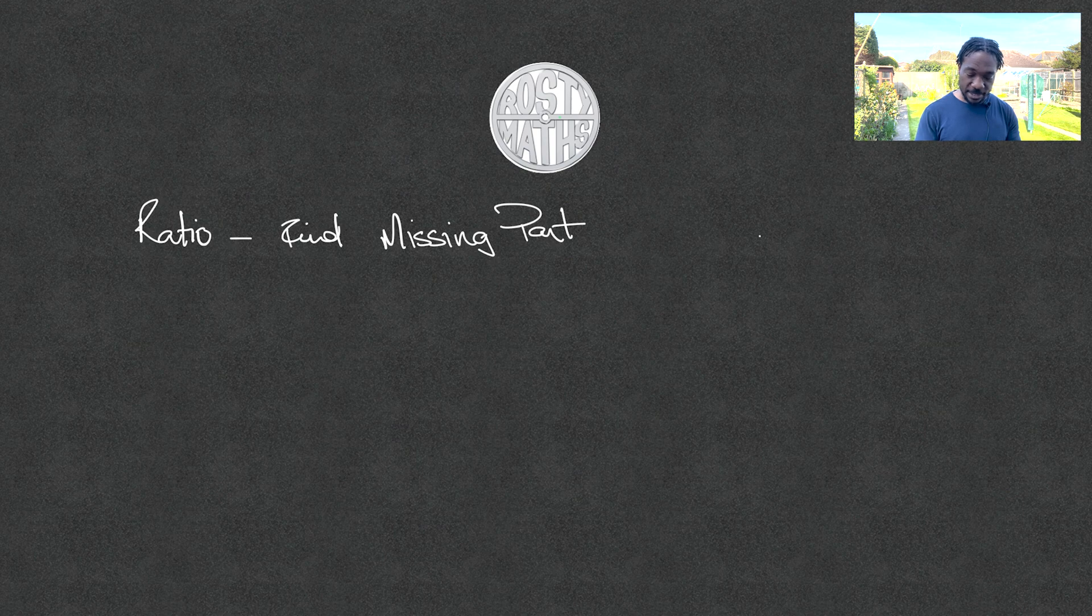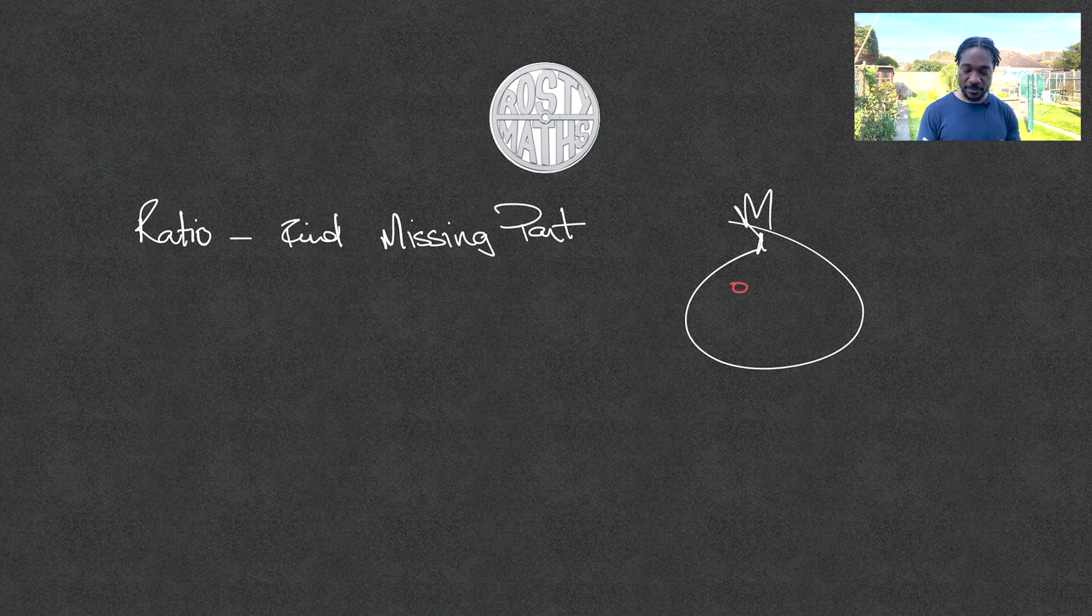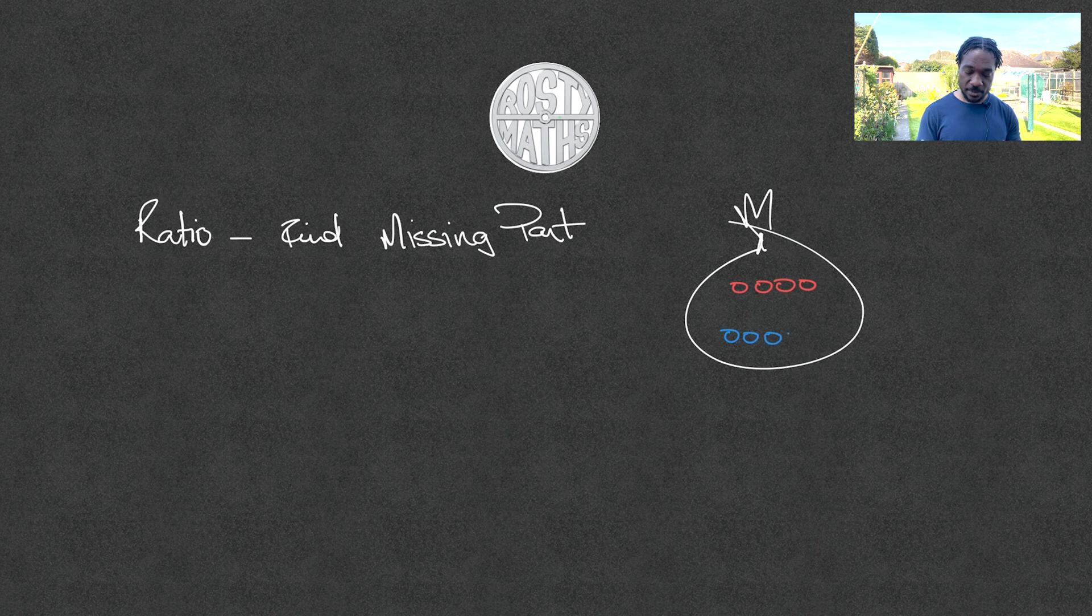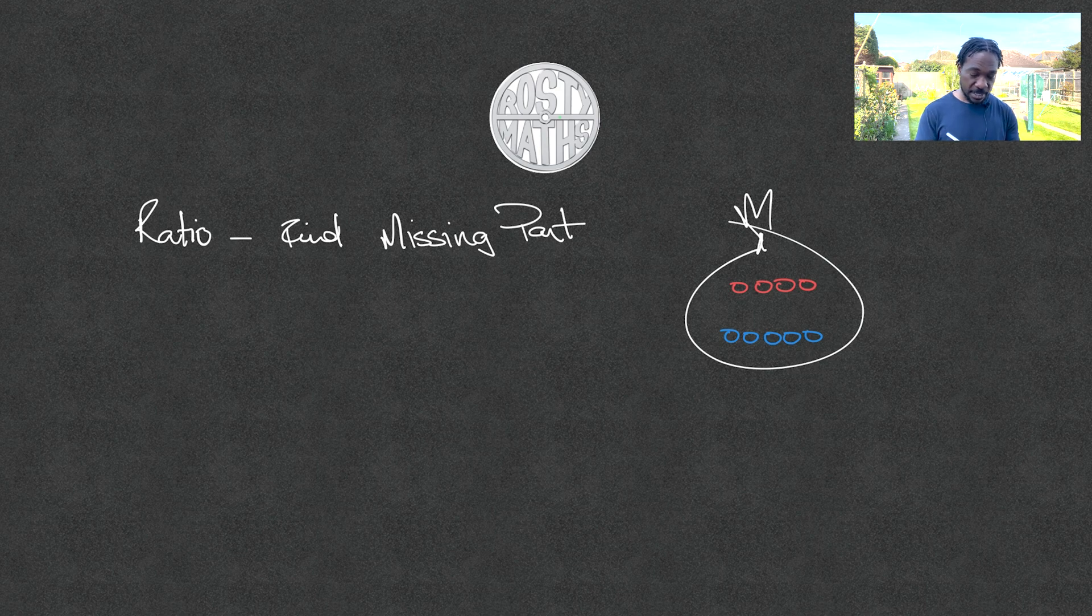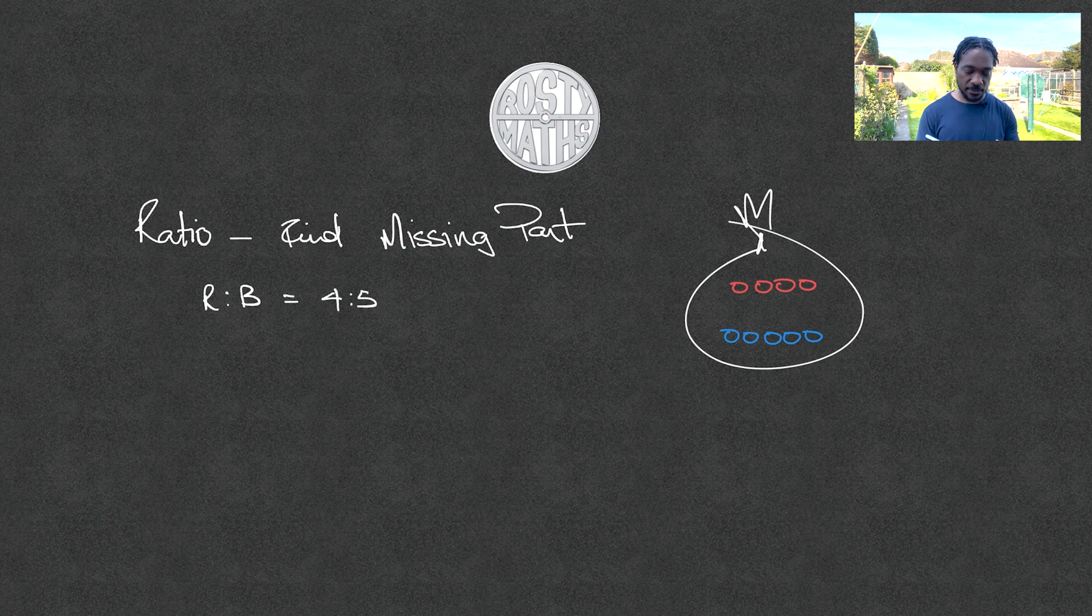First of all, let me start with a ratio. I have got some counters in a bag. I like using counters in a bag - it makes life really simple. In my bag of counters, I'm going to draw a quick bag here. And in my bag of counters, I have got one, two, three, four red counters, and one, two, three, four, five blue counters in my bag. I know that the ratio of counters in my bag for red to blue is equal to four to five.